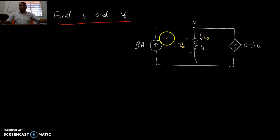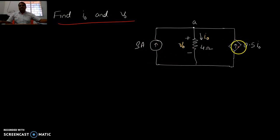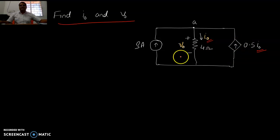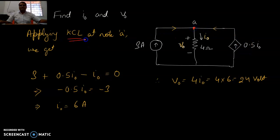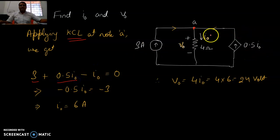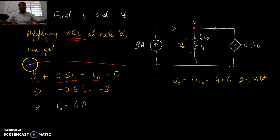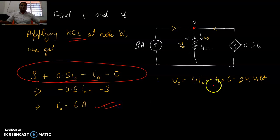Another problem: find i0 and V0. The circuit has a current source and a dependent current source 0.5i0. Since i0 is already defined in the circuit, apply KCL at the node: 3 plus 0.5i0 going toward the node, and i0 going out — that gives one equation. Solving gives i0, and from that V0 can be evaluated as 24 volts.